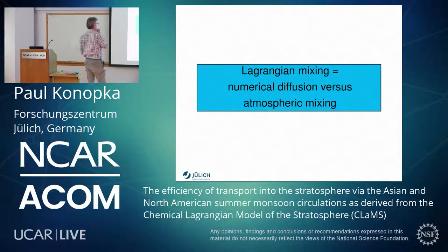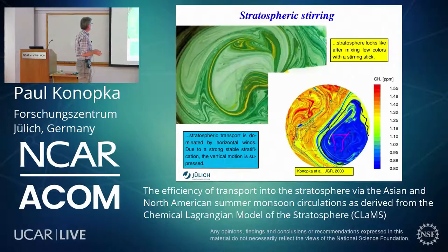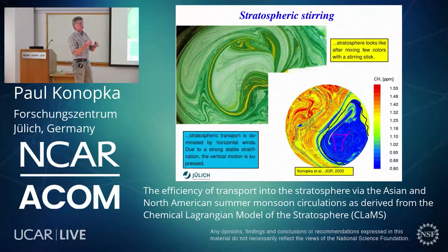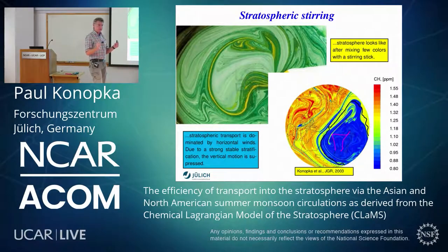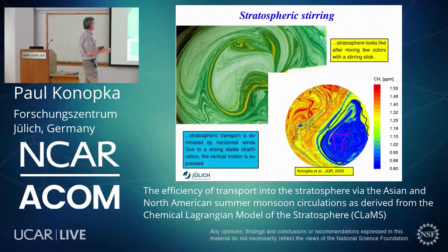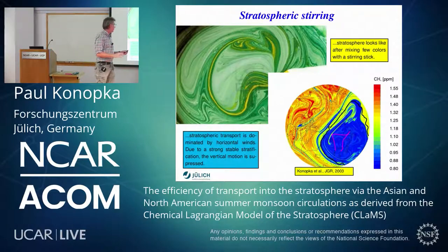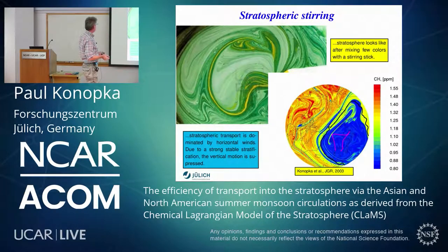Lagrangian mixing is the second part, also very important, and related to numerical diffusion. In the stratosphere, which is stably stratified, every vertical fluctuation is damped, meaning very small vertical mixing. As a result, you get a very strong 2D flow — chaotic advection driven by horizontal winds. Everything looks like if you paint with different colors and mix them, you get filaments. This is also how the stratosphere looks like. Stratospheric transport is dominated by horizontal winds, and vertical motion is suppressed.